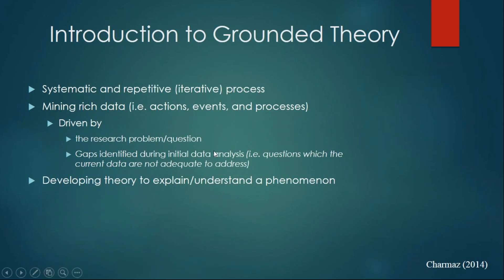Grounded Theory is a systematic process. It's a step-by-step process, but it's also a repetitive process because you go back and forth — looking at your data, reducing the data into codes, and sometimes going back to the data to see whether the code reflects the segment you coded. You go back, you develop it, go back again. Sometimes you have to return to the participant and interview them again to get more information to address the questions you have concerning the data you originally collected.